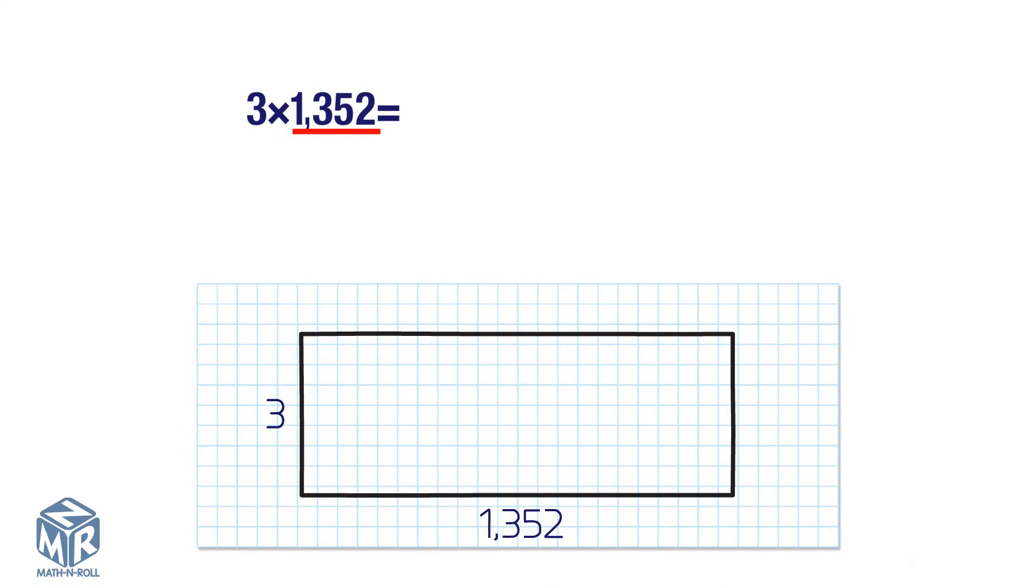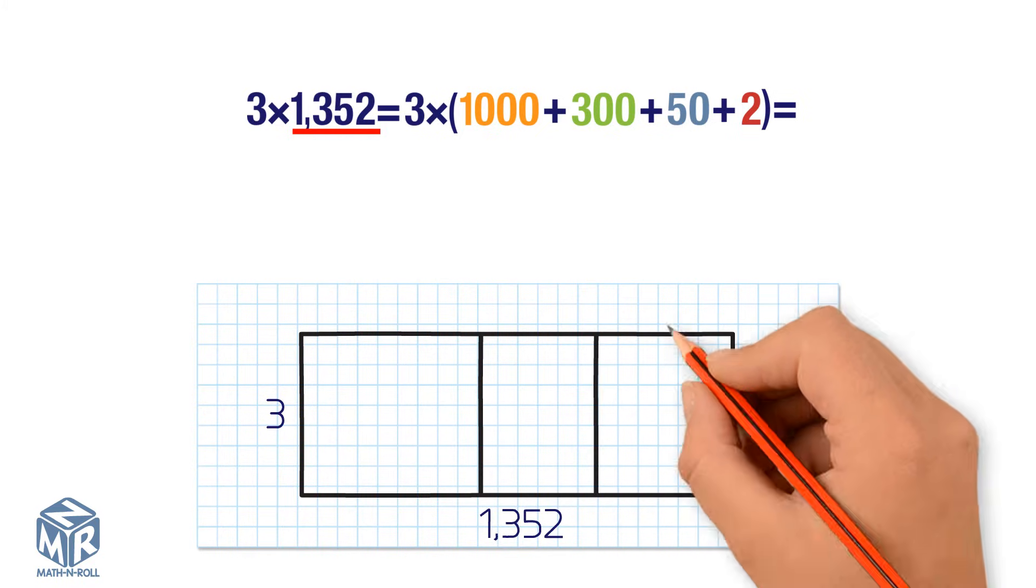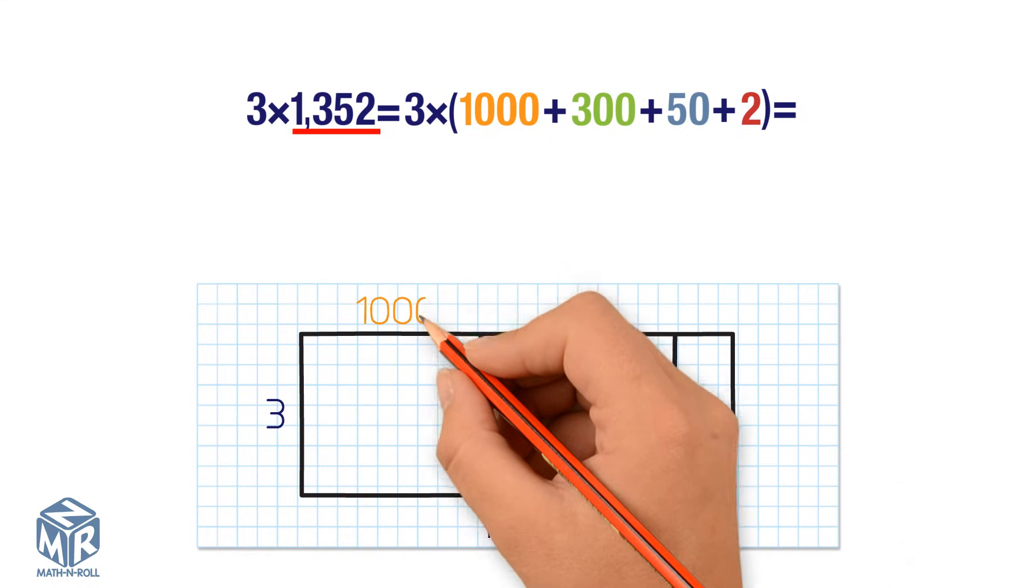Break apart 1,352 into thousands, hundreds, tens, and ones. We have 1,000, 300, 50, and 2. Break apart the model into thousands, hundreds, tens, and ones.